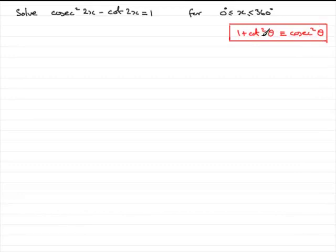So we can use this here. We can replace the cosec squared 2x with 1 plus cot squared 2x. So if we put therefore 1 plus cot squared 2x minus cot 2x equals 1.